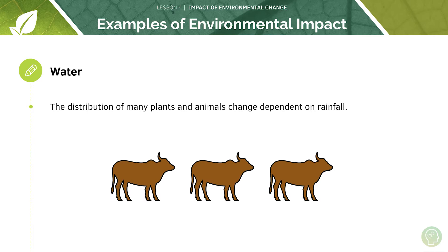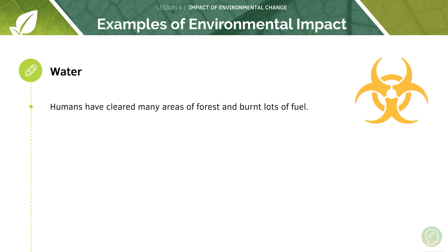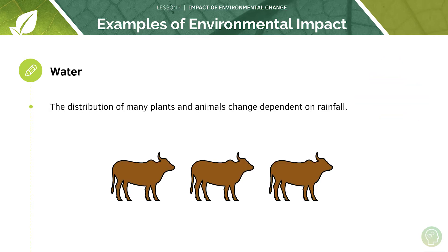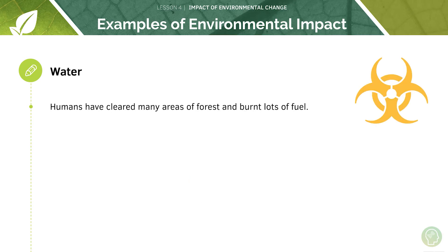Water can also influence this. The distribution of many plants and animals changes dependent on rainfall. A really incredible phenomenon occurs in the Serengeti, which is located in northern Tanzania, as millions of wildebeest migrate from north to south and vice versa in search of water as the rate of rainfall changes.